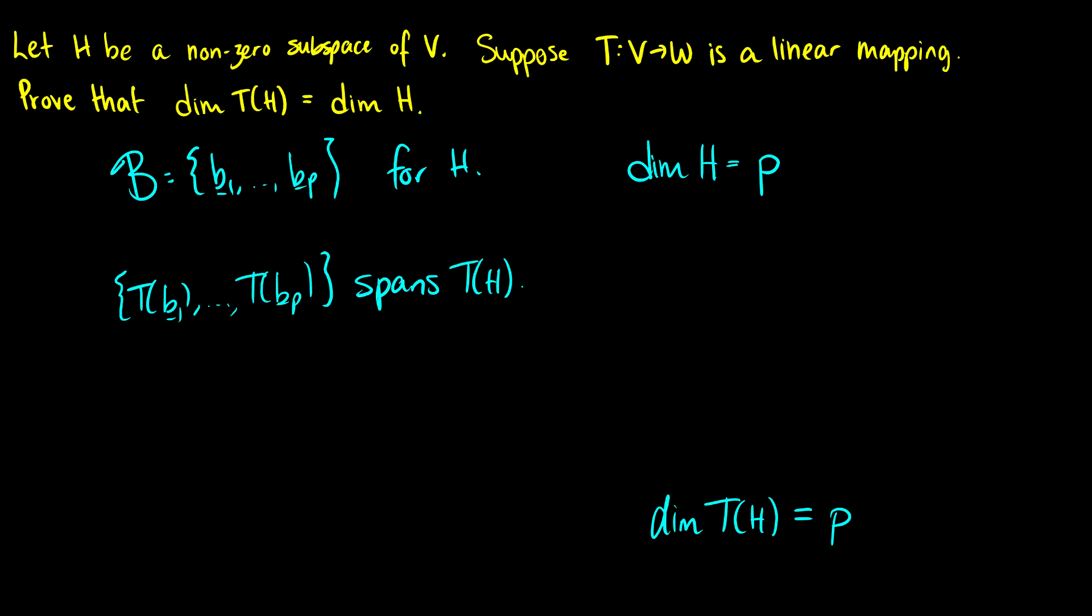So what's the other requirement for this set here to be a basis? Well, it has to span all of T(H) and it has to be linearly independent. We also showed that any one-to-one function, if we have a linear independence from v₁ through vₚ, we're going to get a linear independence from T(v₁) all the way up to T(vₚ). So this is also linearly independent.